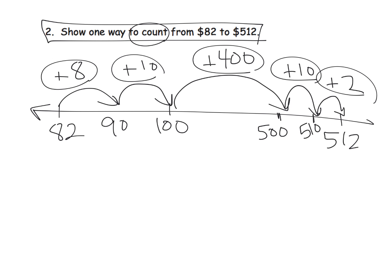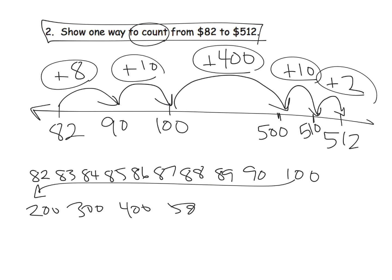Now that's the empty number line. I believe for this problem, really what they're expecting us to do is to count. So essentially they're saying let's start with 82 and say 83, 84, 85, 86, 87, 88, 89, 90, and then 90 up to 100. And then we can start over here and go to 200, 300, 400, 500, and then we could go up to 510.